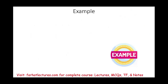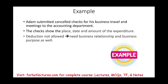For example, Adam submitted canceled checks for his business travels and meetings to the accounting department. The checks showed the place, date, and amount of the expenditure. However, the deduction is not allowed. Why? Because you also need the business relationship and business purpose. Adam will have to justify why he spent this money, what the relationship was between himself and the other individuals, and what the business purpose was. Substantiation is an important feature of the accountable plan — you need everything unless you use the per diem allowance.